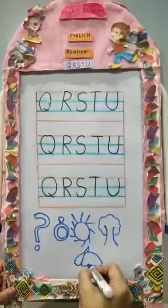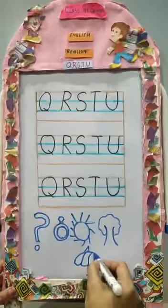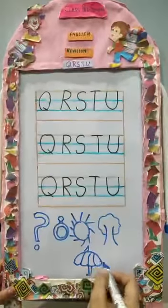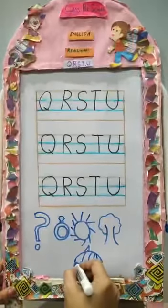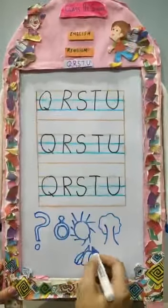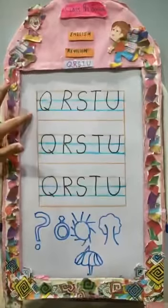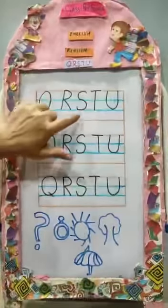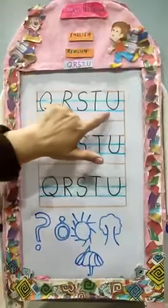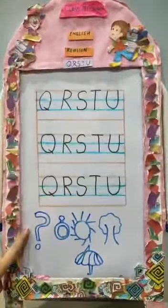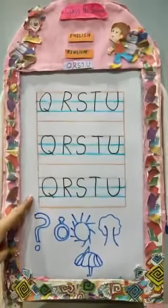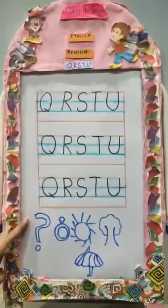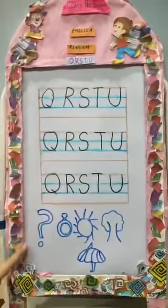So babies, these are the alphabets Q, R, S, T and U, and these are the pictures that go with these letters. So keep practicing!